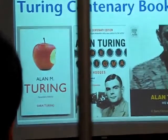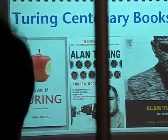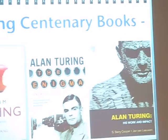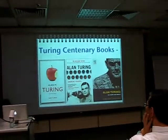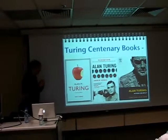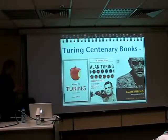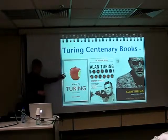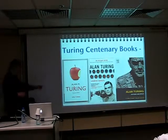One nice thing happening this year is that Sarah Turing's biography of her son — she more or less self-published it. There were only about 300 to 500 copies published. The original volume goes for two and a half thousand dollars on eBay, but it's been republished.